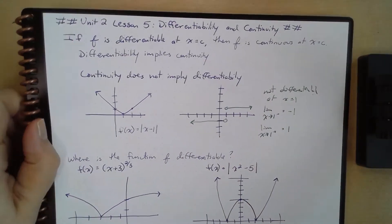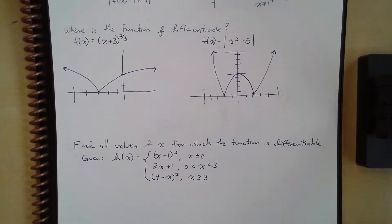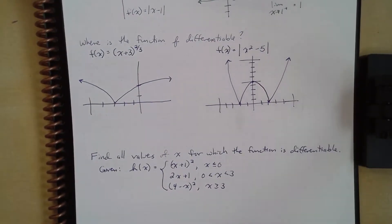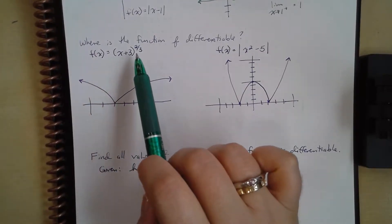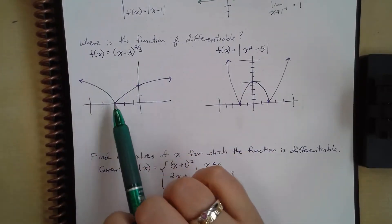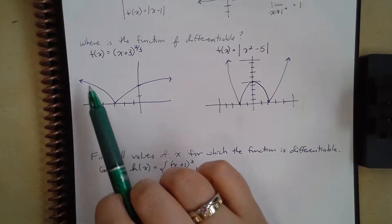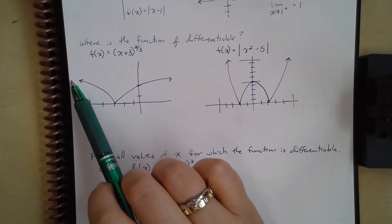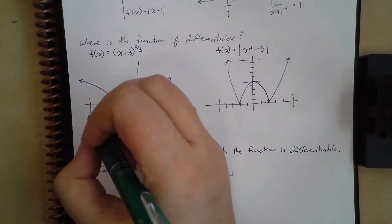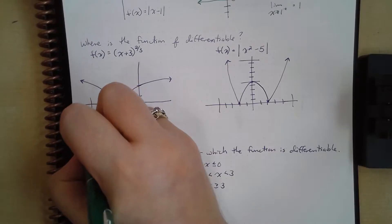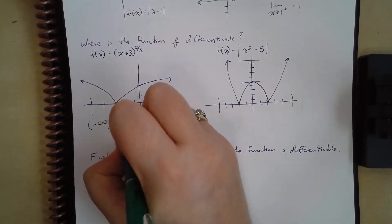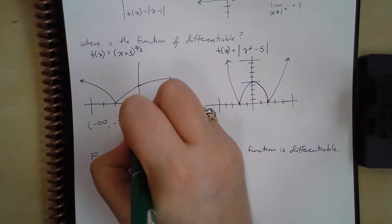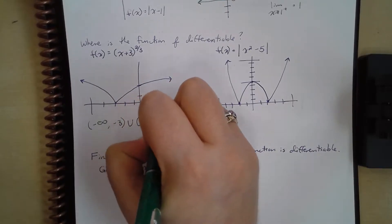So where is a function differentiable? Let's look at some examples. We have this graph, f of x equals x plus 3 to the two-thirds power. We have what looks like a cusp here at negative 3 — it comes down and it goes up. So we can say that this is differentiable from negative infinity to negative 3, and then again from negative 3 to infinity.